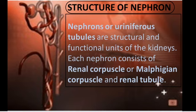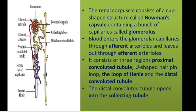The renal corpuscle consists of a cup-shaped structure called the Bowman's capsule. This is the Bowman's capsule - it is looking like a cup. The Bowman's capsule contains a bunch of capillaries called the glomerulus. These are the bunch of blood capillaries that make up the glomerulus.